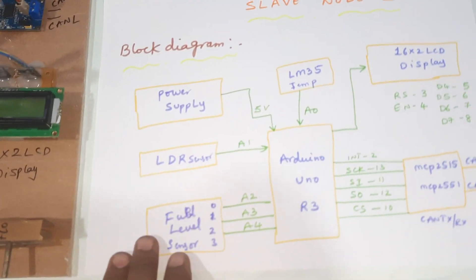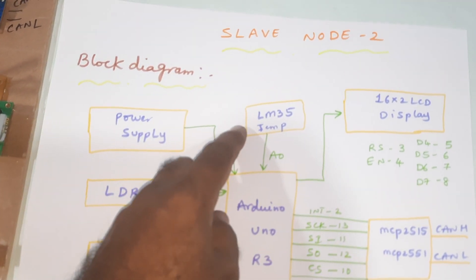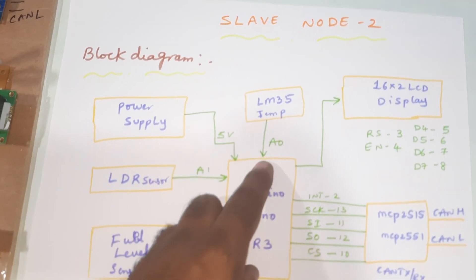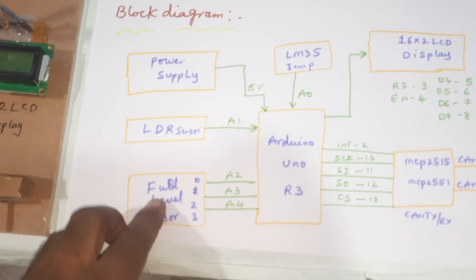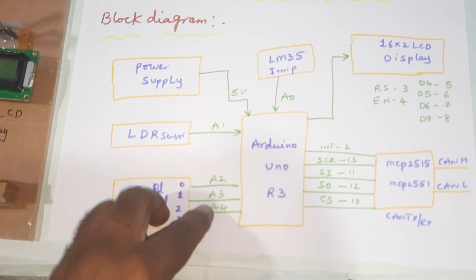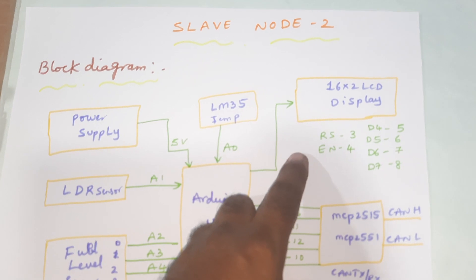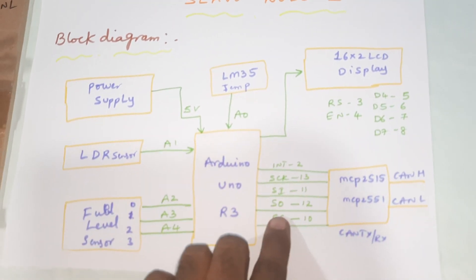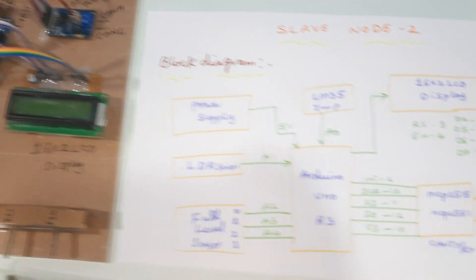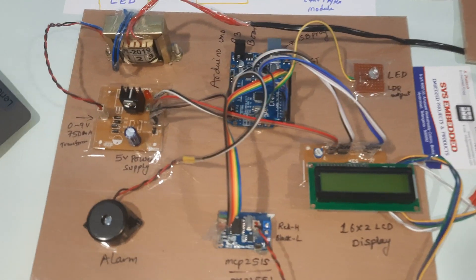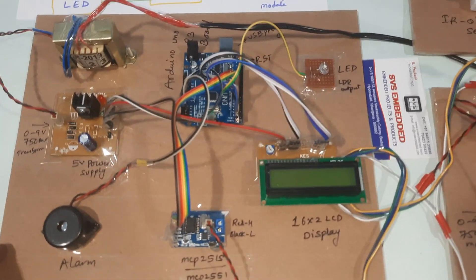In the slave 2 block diagram: LDR is connected to A1, LM35 temperature sensor to A0, and fuel sensors are connected to A2, A3, and A4. LCD connections are as before, along with the MCP2515 and 2551 CAN transceiver module.